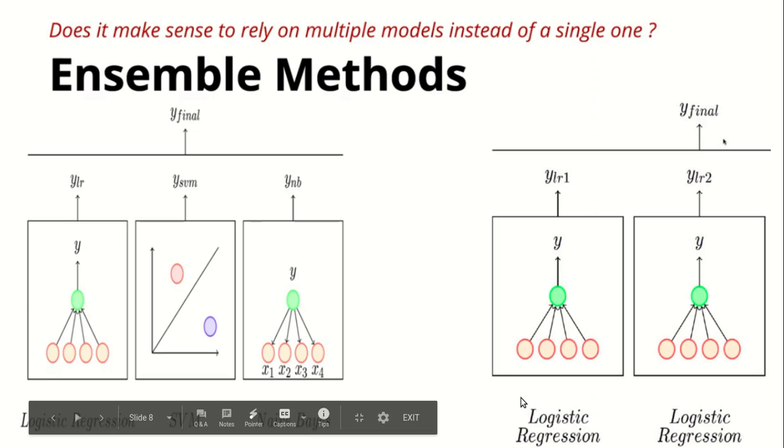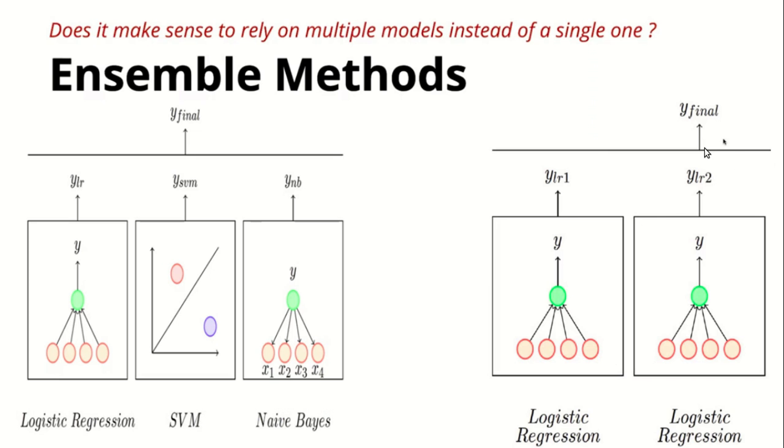We can have only logistic regression and feed this input. We'll have different weights for all these networks and we'll have output, then we calculate the final from here. When we have same function to approximate the predictive function, we train our model on different subsets of data or different subsets of features. These are the two ensemble methods used in machine learning.